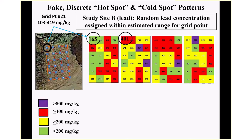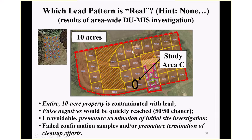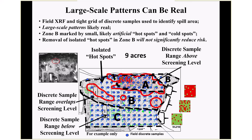Each new set of samples gives a different pattern. These really small-scale hot spots and cold spots based on discrete data are completely artificial — you could call it fake data. None of the lead patterns are real. This site was actually part of a 10-acre site that's all heavily contaminated with lead. If we'd started off collecting discrete samples in this little spot, we'd hit a false negative pretty quickly — get a number below 200 ppm. Unavoidable premature termination of site investigation. If we started excavating, we'd get failed confirmation samples and potentially a premature termination of the entire cleanup effort.